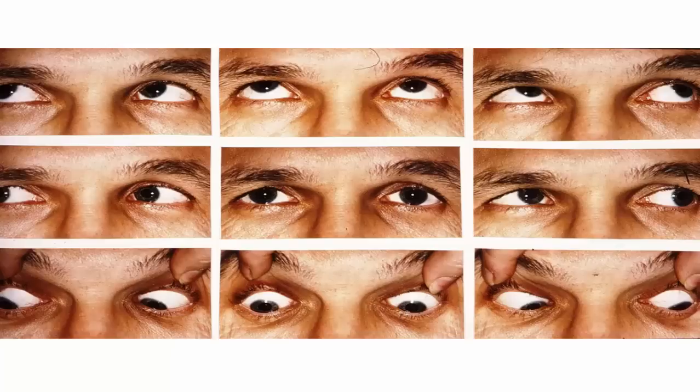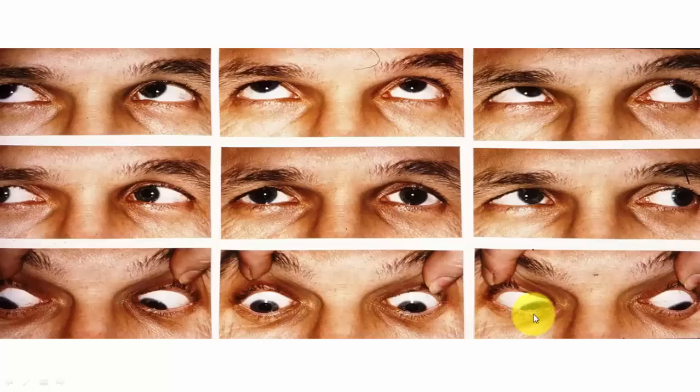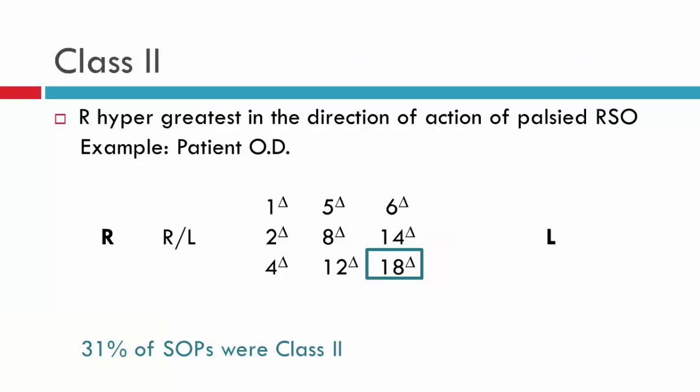Here we have a patient with a class one superior oblique palsy. In primary position it's difficult to detect the deviation, but by a fraction there appears to be a right on left. When the patient looks over into left gaze, the right on left has increased. Looking up, the inferior oblique is clearly overacting, and looking down, the superior oblique is underacting. However, the inferior oblique overaction is greater than the superior oblique underaction, causing the deviation to be greatest in levo elevation. This is the class one fourth nerve palsy.